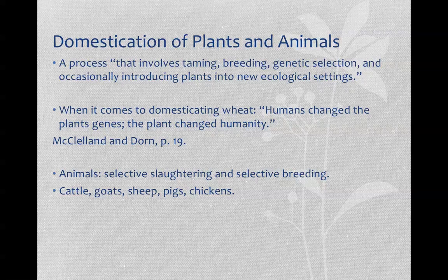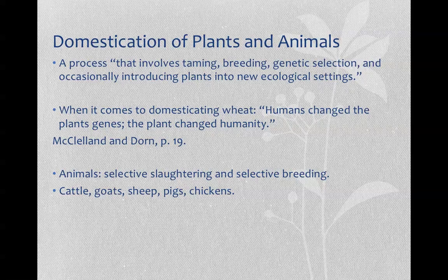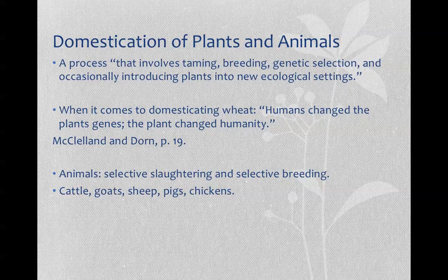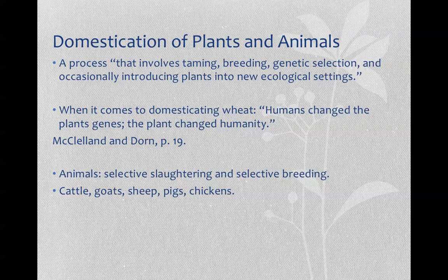This is a complex process that doesn't happen overnight. Many argue it was a very difficult process because the first folks who wanted to settle down actually had to expend more calories on a daily basis to get farming going than they had to do hunting and gathering. So this idea of it being an easier kind of life — in the beginning, not so much. Still, there was a great impetus among humans to want to settle down, to have a steady supply of water and a steady supply of food. So domestication of plants and animals was one of the first technological innovations that happens. Domestication is a process that involves taming, breeding, genetic selection, and occasionally introducing plants into new ecological settings.